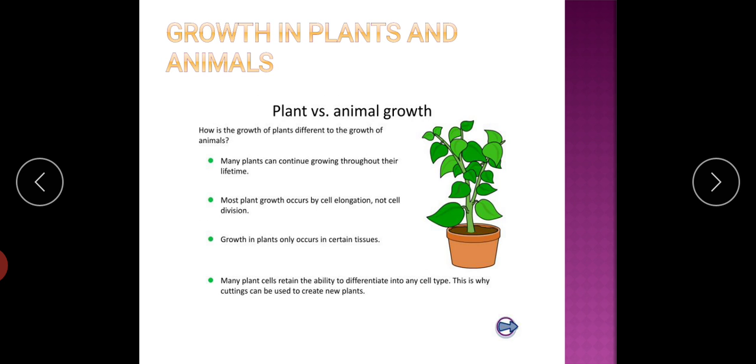Growth is different in plants and animals. Plants continue to grow throughout their lifetime. Most plants grow by cell elongation, means the cell becomes longer. Growth in plants occurs only in certain tissues.